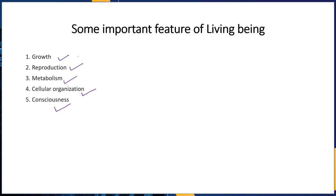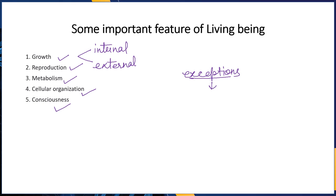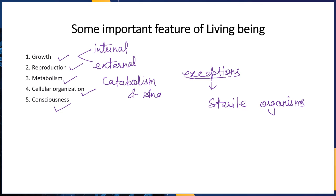Growth may be internal or external, but in living organisms it is totally internal. Reproduction is one of the characteristic features of all living organisms, but there are some exceptions — sterile organisms, like worker bees and ants, cannot reproduce. Metabolism involves catabolism and anabolism — two types of activities taking place inside the body.